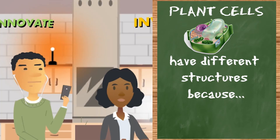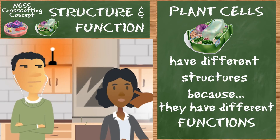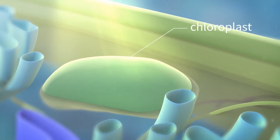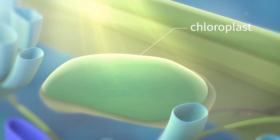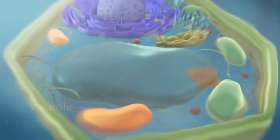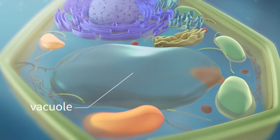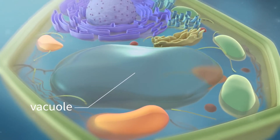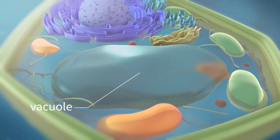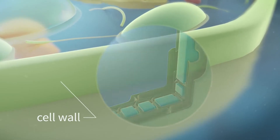Plants can't get up and walk to the store when hungry, so they contain chloroplasts that use light to create glucose for energy. They can't run to the water fountain when thirsty, so their cells have very large vacuoles to hold water and other materials. To keep water inside and cells protected and rigid, plants, some fungi, and prokaryotes have thick cell walls around their membrane as an extra barrier.